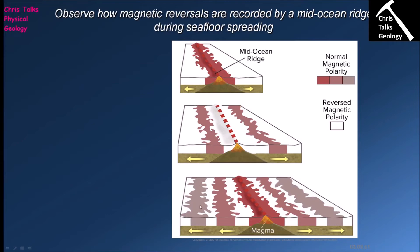Over time we can see a pattern of reversal, normal, reversal, normal, reversal, normal — building up on both sides of the spreading ridge. Each side of the spreading ridge is a mirror image of the other in terms of magnetic polarity. This is a really good piece of evidence showing that divergent plate boundaries are where new oceanic crust is being made, because we can see old oceanic crust forms at the ridge and steadily gets pushed away as new crust is produced.